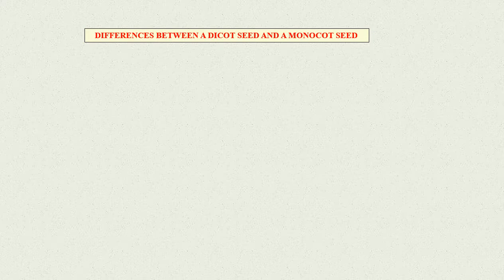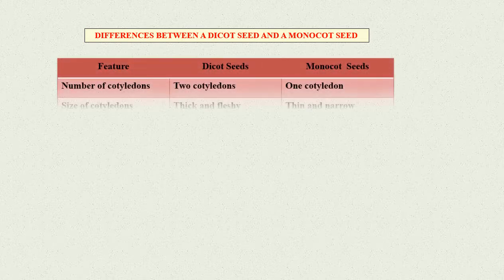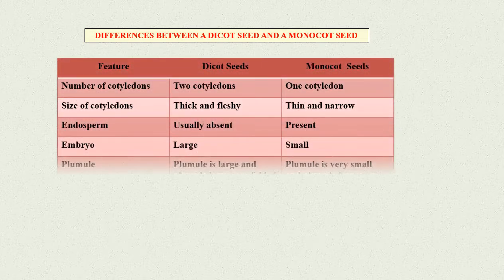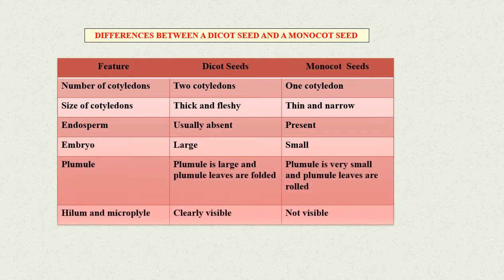Let's understand the basic differences between a dicot seed and a monocot seed based on the following features. Number of cotyledons: In dicot seeds, there are two cotyledons.